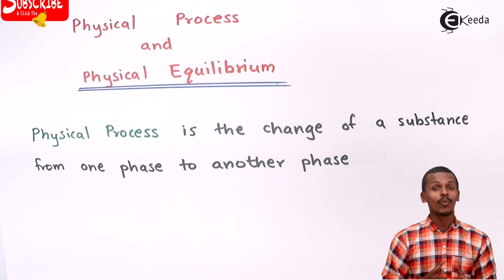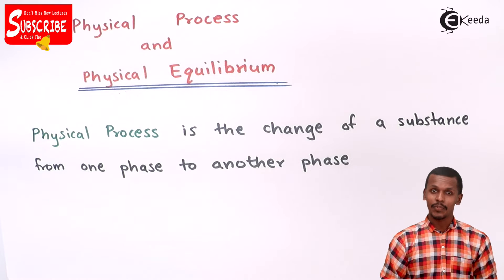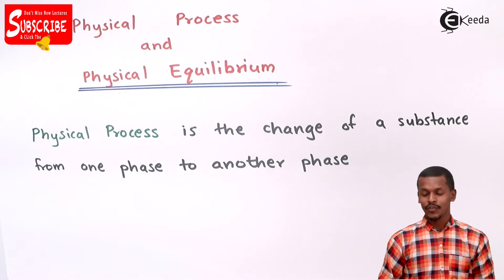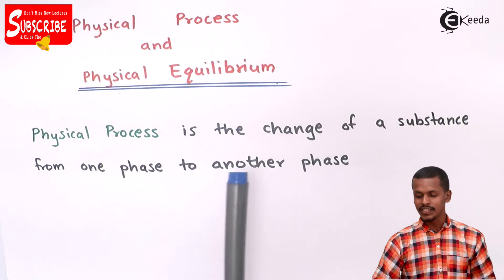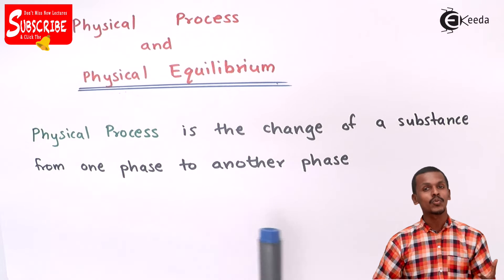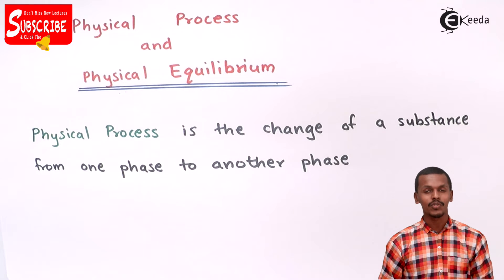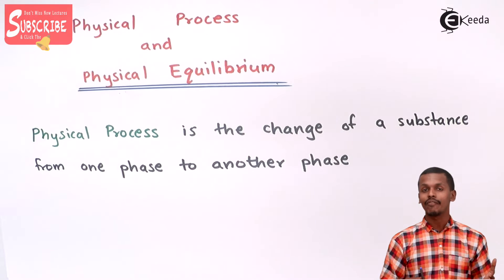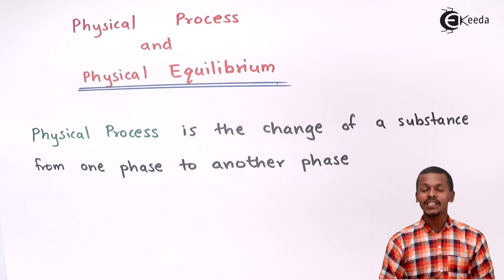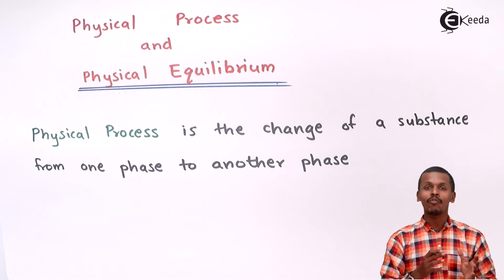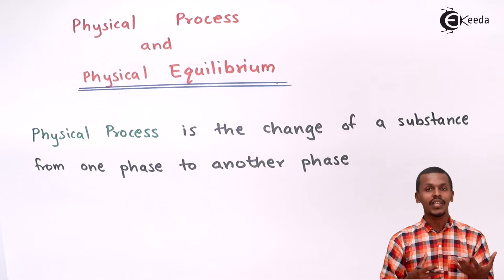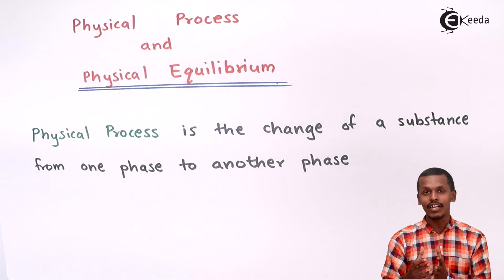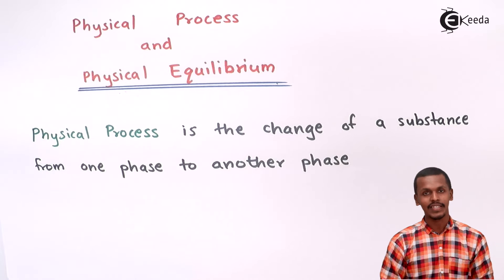Let us understand what is actually the physical process. Physical process is the change of a substance from one phase to another phase. As the name suggests, there would be a change in the physical phase, or we could say a change in the physical state of a particular substance.